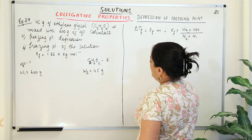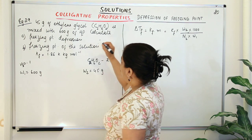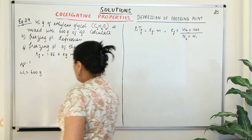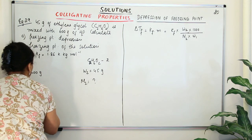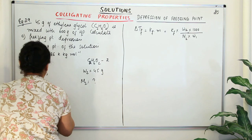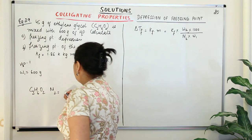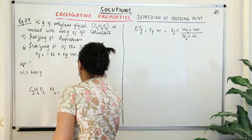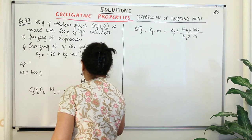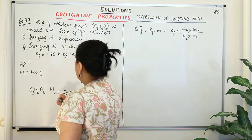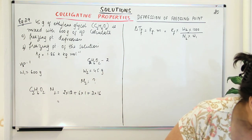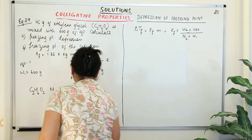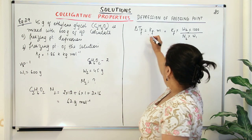Now we need to find the molar mass M2 of the solute, ethylene glycol, C2H6O2. There are 2 carbons (2 × 12), 6 hydrogens (6 × 1), and 2 oxygens (2 × 16). Solving this gives the molar mass of ethylene glycol as 62 grams per mole. Now we have all the required quantities.